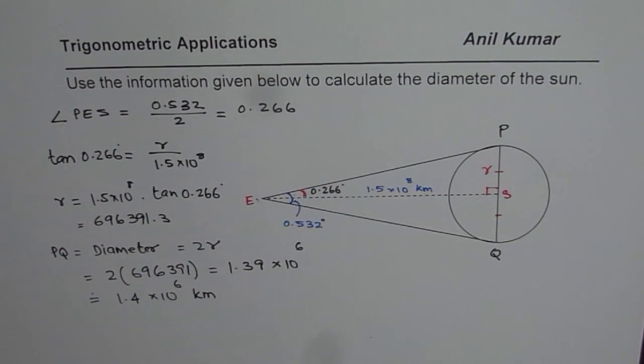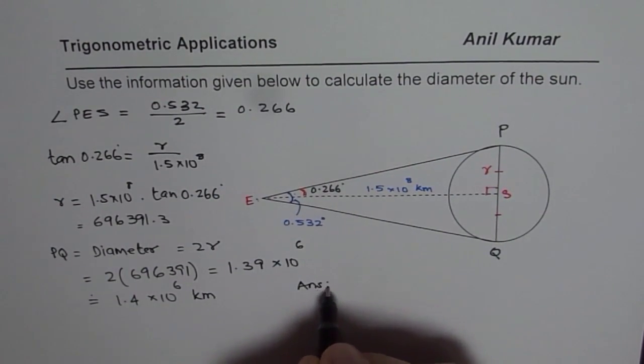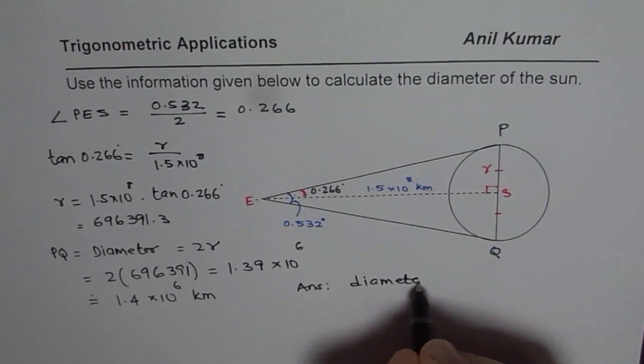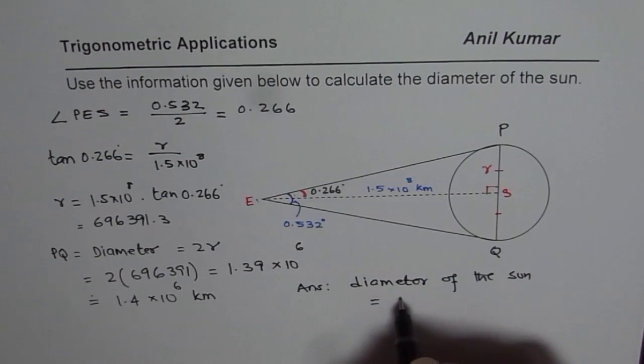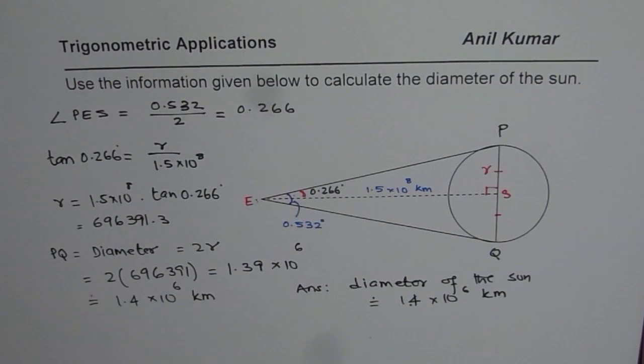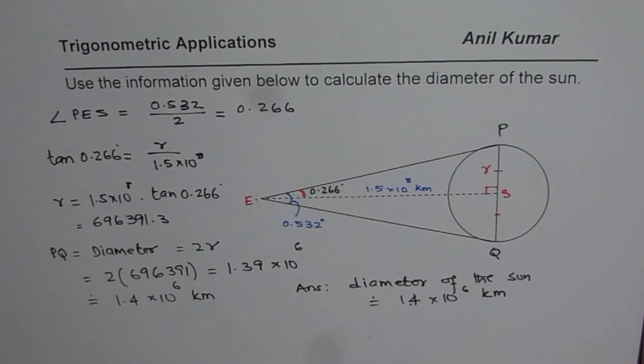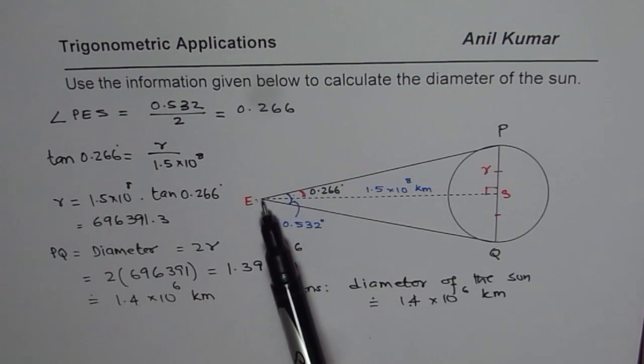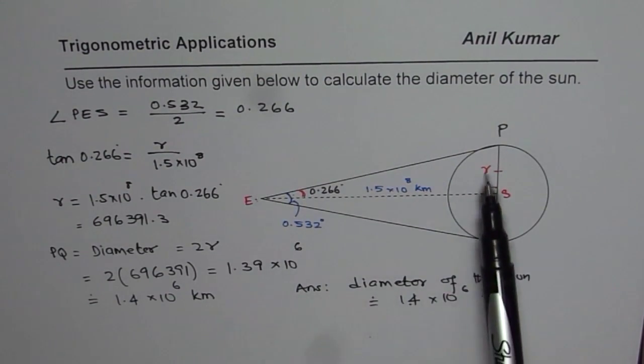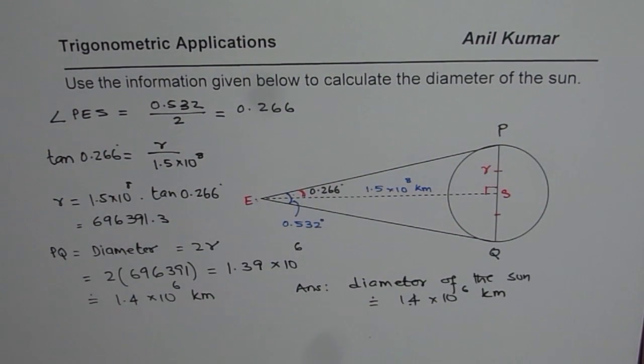So that becomes the diameter of the sun. So our answer is that the diameter of the sun equals to 1.4, approximately, 1.4 into 10 raised to power 6. So I hope with this, you understand how we can use the primary trigonometric ratios to calculate the diameter of the sun. So we use tan theta, since we knew the adjacent side and the angle involved, found the radius, and twice the radius is the diameter. I hope that helps. Thank you, and all the best.